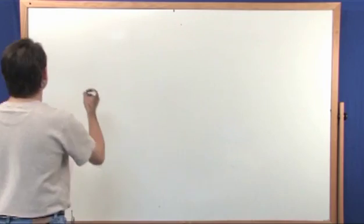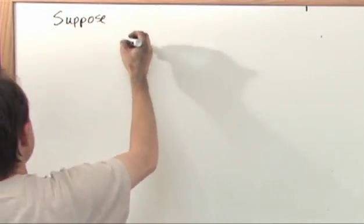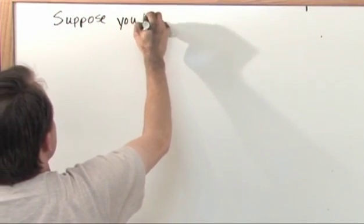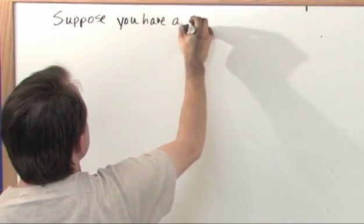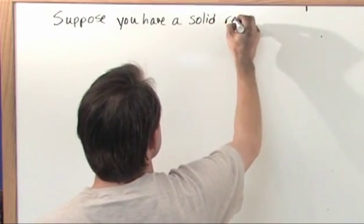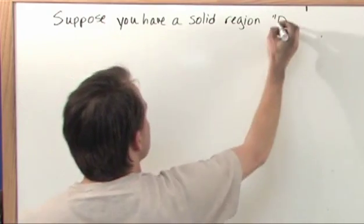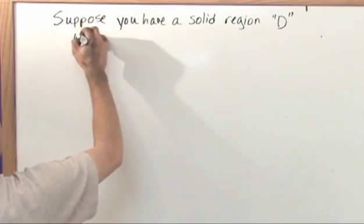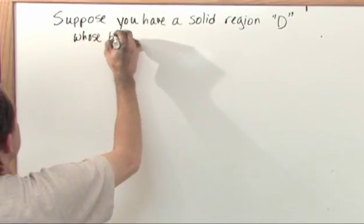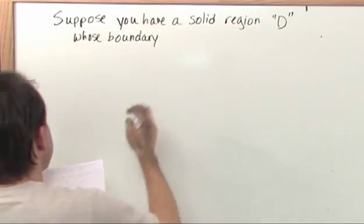So basically, suppose you have a solid region D whose boundary is the surface Σ.